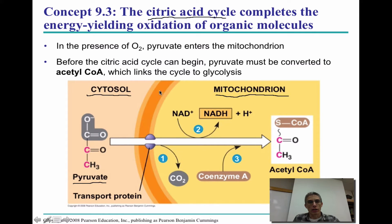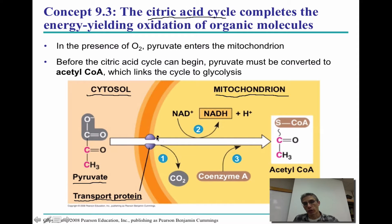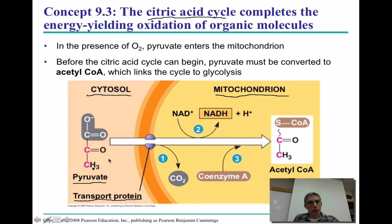If you notice in the mitochondrion, looking at its structure, we have an outer membrane and an inner membrane. It's really important for this pyruvate to be able to make its way through both of these membranes. The only way it can do that is by having a transport protein help it across. Getting this pyruvate across the membrane is considered active transport, so it does require a little bit of energy on the part of the cell. Once we get the pyruvate — this three-carbon molecule — across the membrane, we need to prepare it for the Krebs cycle.